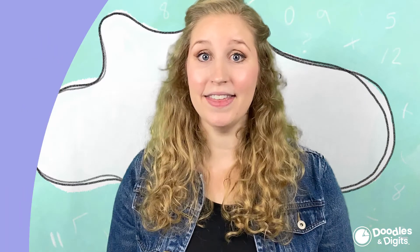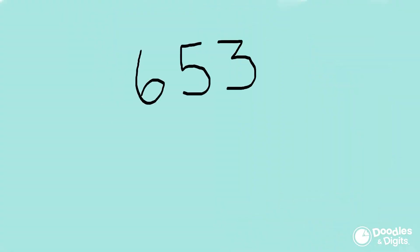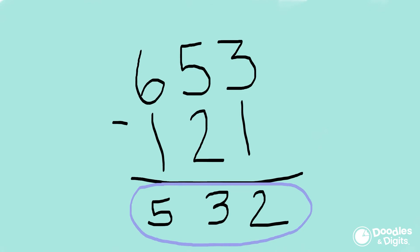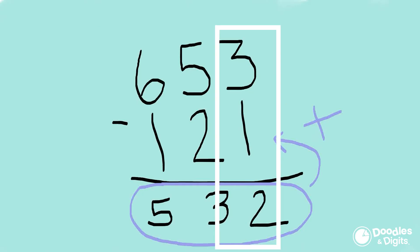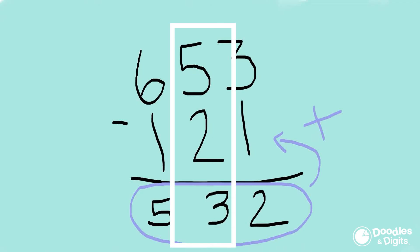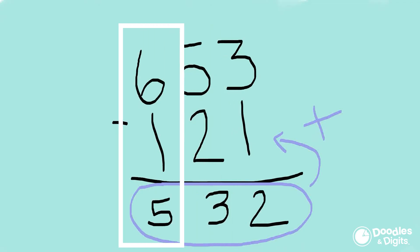Is there a way to check your thinking when you're finished? There's actually a great way to check when using the standard subtraction algorithm. You can take the difference and add it to the subtrahend, and it should equal the top number. For example: 2 plus 1 equals 3, 3 plus 2 equals 5, 5 plus 1 equals 6 — so I know that my difference is correct.